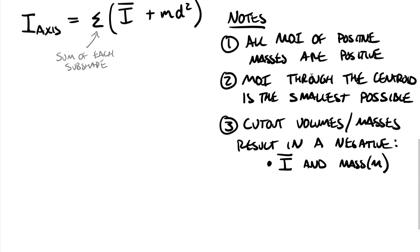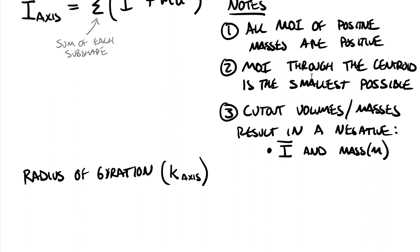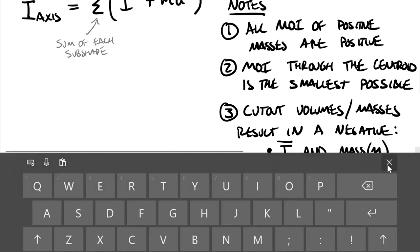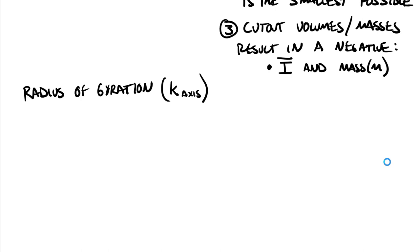Two other ideas to cover: the first is the radius of gyration. The radius of gyration uses the variable small letter k, and is always about some axis — just like moment of inertia. The equation is: k about the desired axis equals the square root of the moment of inertia about that axis divided by the mass of the body.